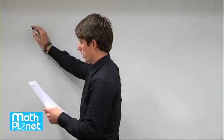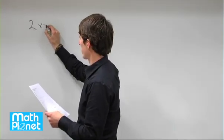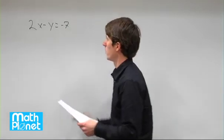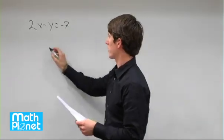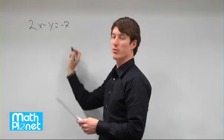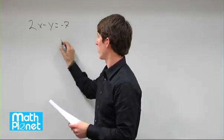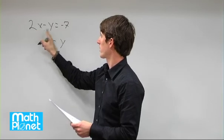So our first equation is 2x minus y equals negative 7. We can rewrite this for y. If we move y to this side and move the 7 to this side, we get y equals 2x plus 7.